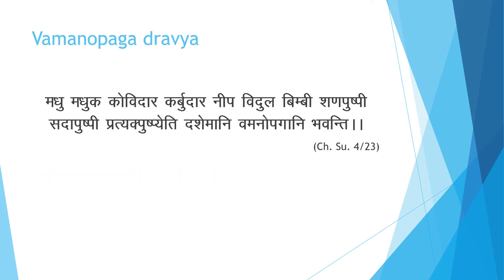While describing various dashmani in Sutra Sthana chapter 4, Acharya Charak has described Vamanupak dashmani as: madhu, madhuk, kovidar, karbudar, neep, vidul, bimbi, shankushpi, sada kushpi and pratyak kushpi.